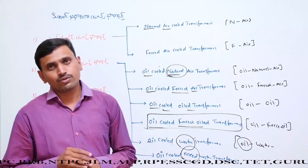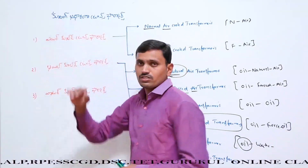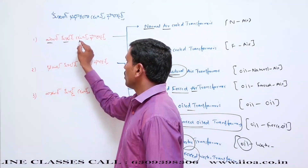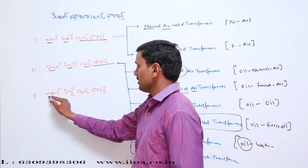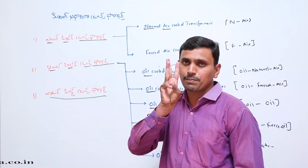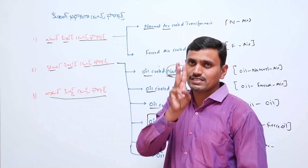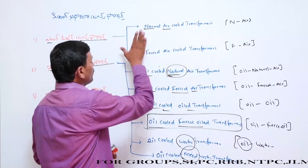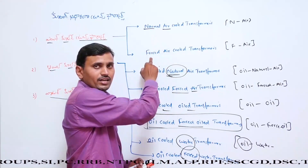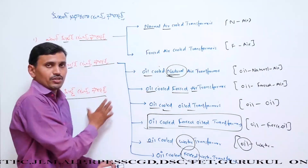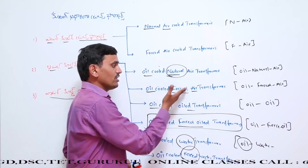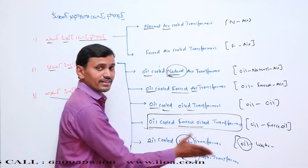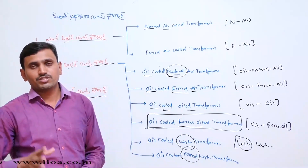Cooling based transformers are three types: one is air cooled transformers, oil cooled transformers, and water cooled transformers. This cooling purpose depends upon three basic principles - three basic parts are involved: Number 1 is air, Number 2 is oil, Number 3 is water. These are very important cooling purposes.